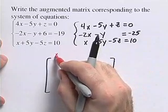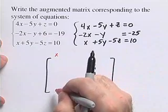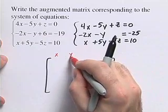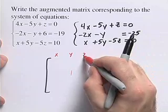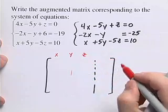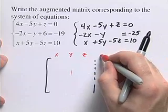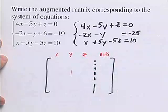I'm going to write all the coefficients for x in one column in our matrix. We're going to write all the coefficients for y in a second column, all the coefficients for z in the third column, and then here we're going to write our right-hand side, which is the constant in our equation.